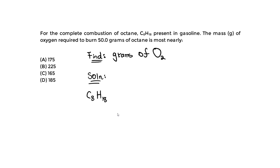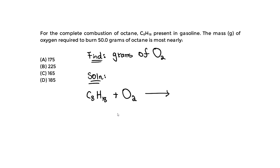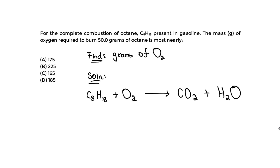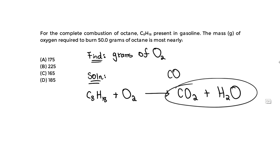So it's octane plus oxygen on the reactant side, and on the product side — the right side — we always have CO2 and H2O for complete combustion. If you have incomplete combustion, you might have CO2 or CO, carbon monoxide, which is actually toxic. When you have complete combustion, you only have these two products.